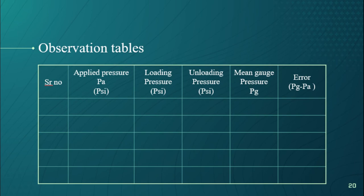Similarly, we will note down the reading for unloading case from the gauge. In the mean column, you will take the mean of loading and unloading pressure across every applied pressure. To find out error, we will subtract mean value from the applied pressure value. In this way we will be able to calculate error of Bourdon gauge in every reading.